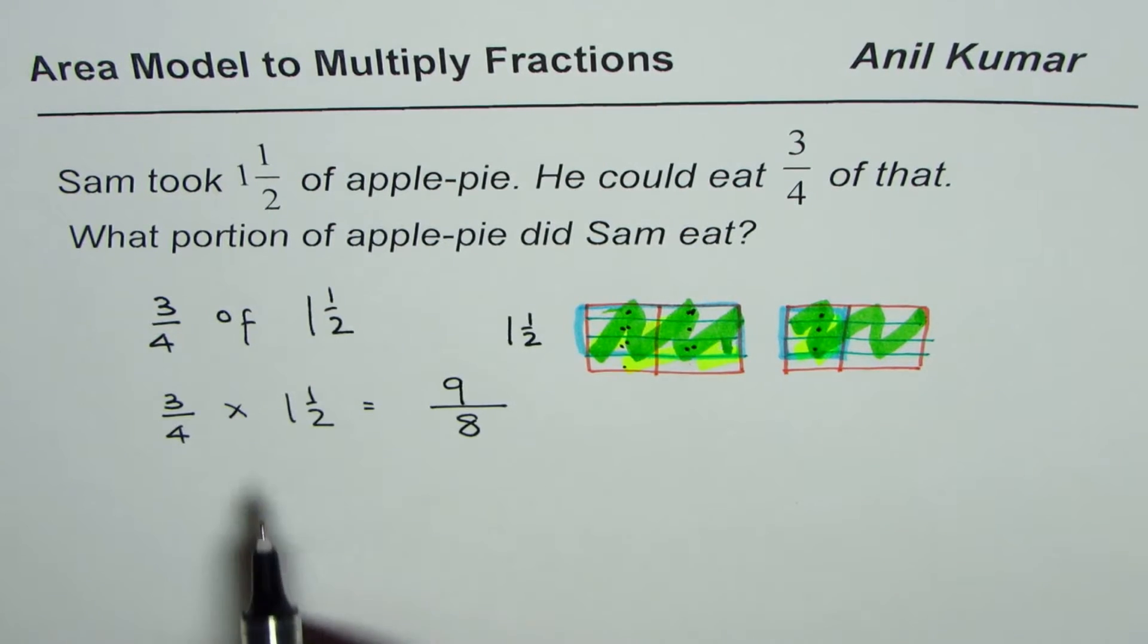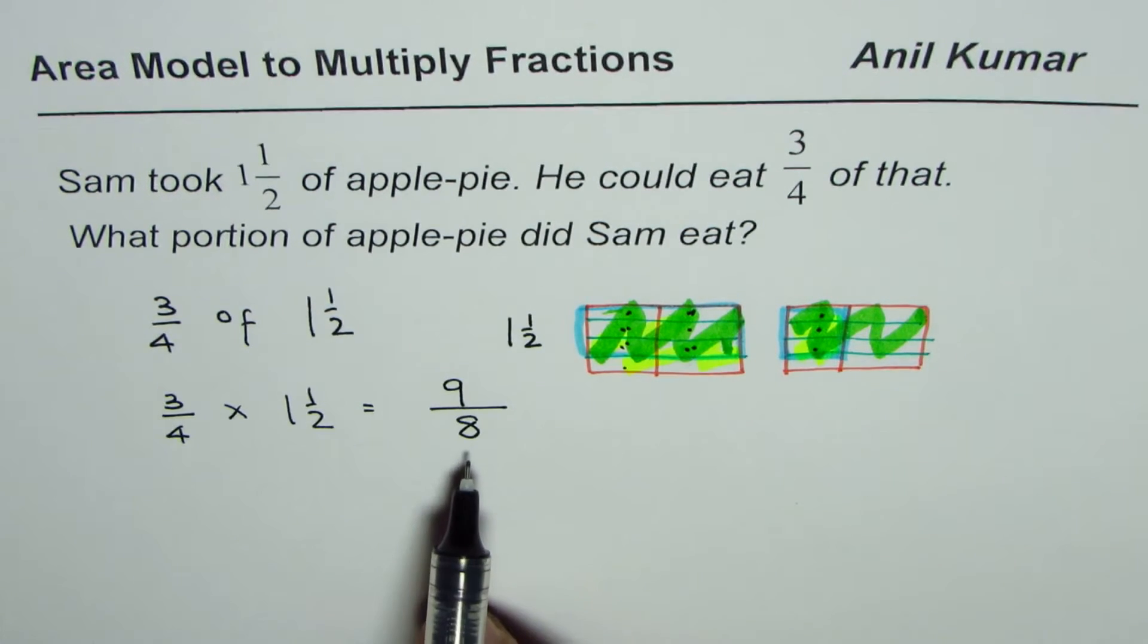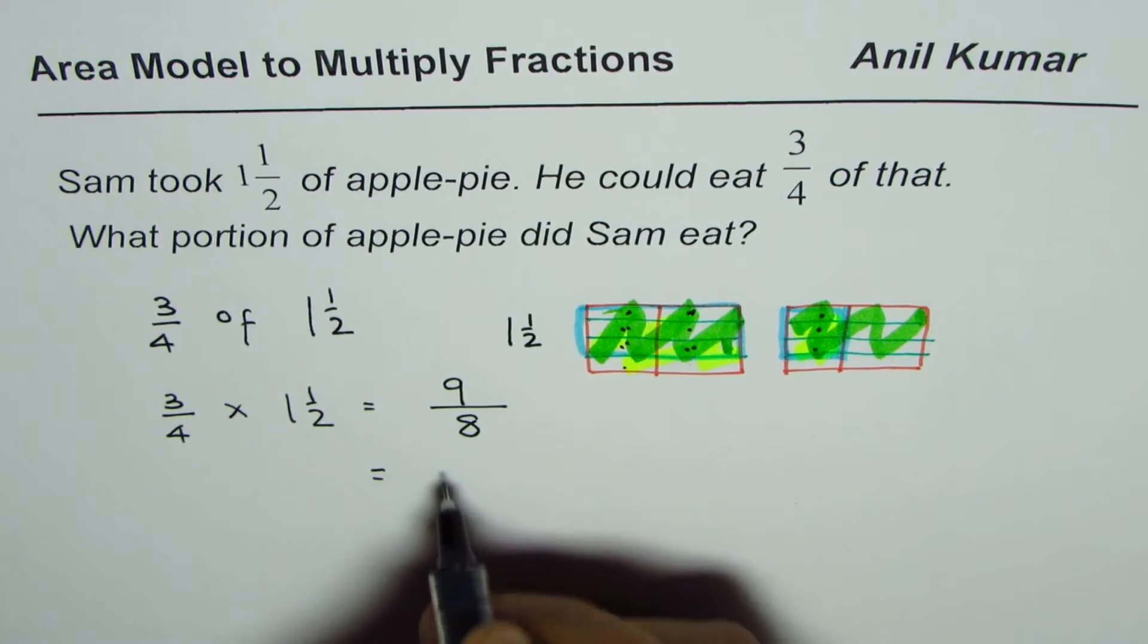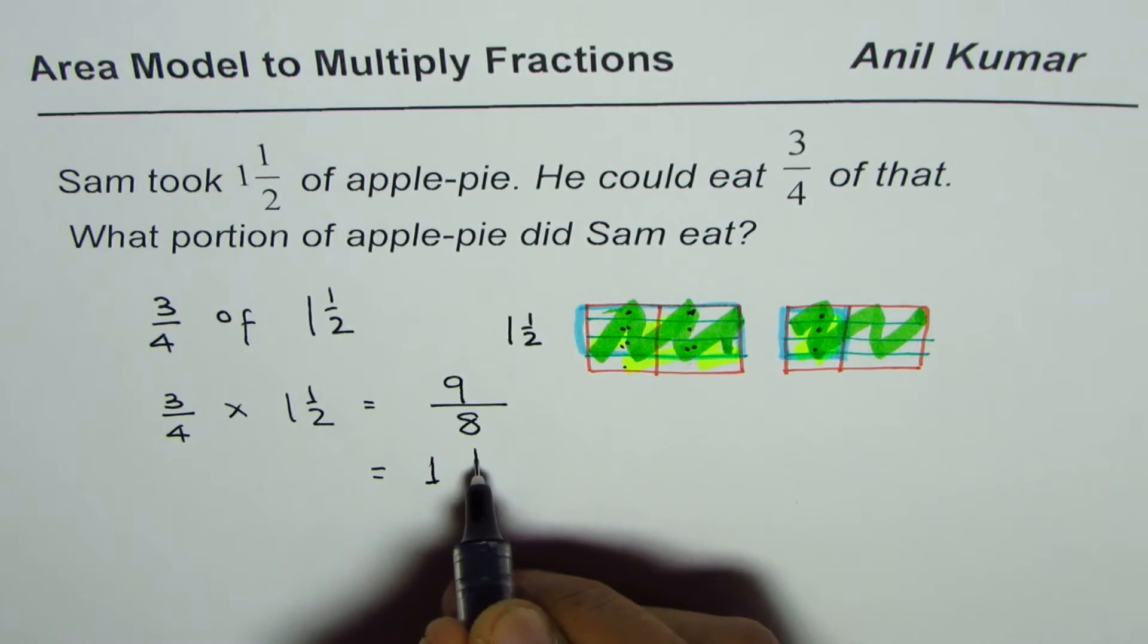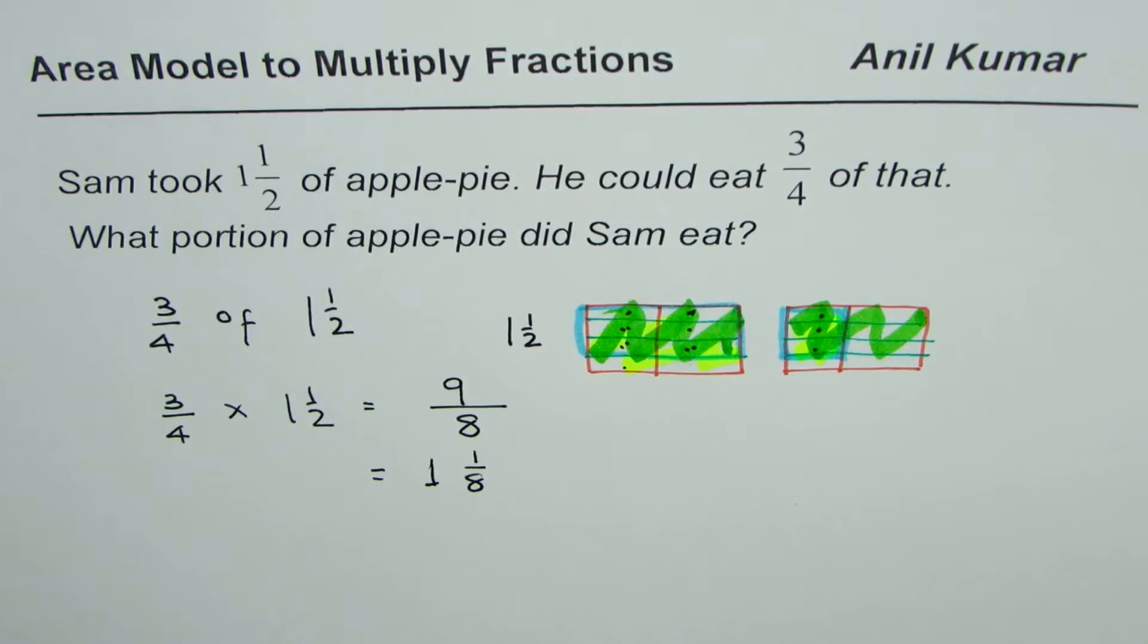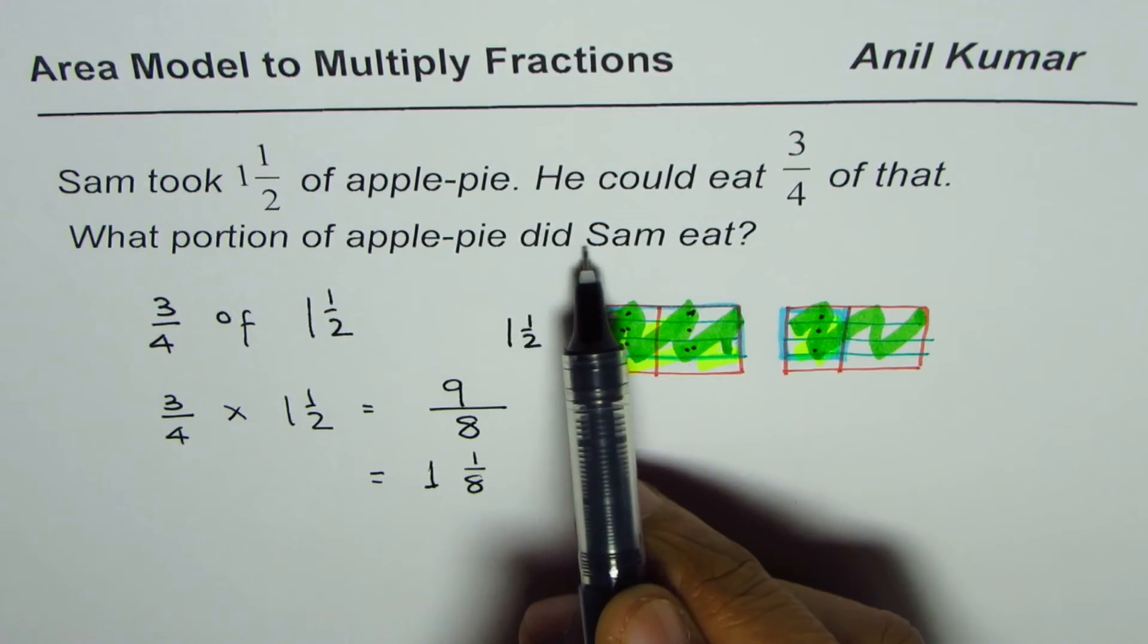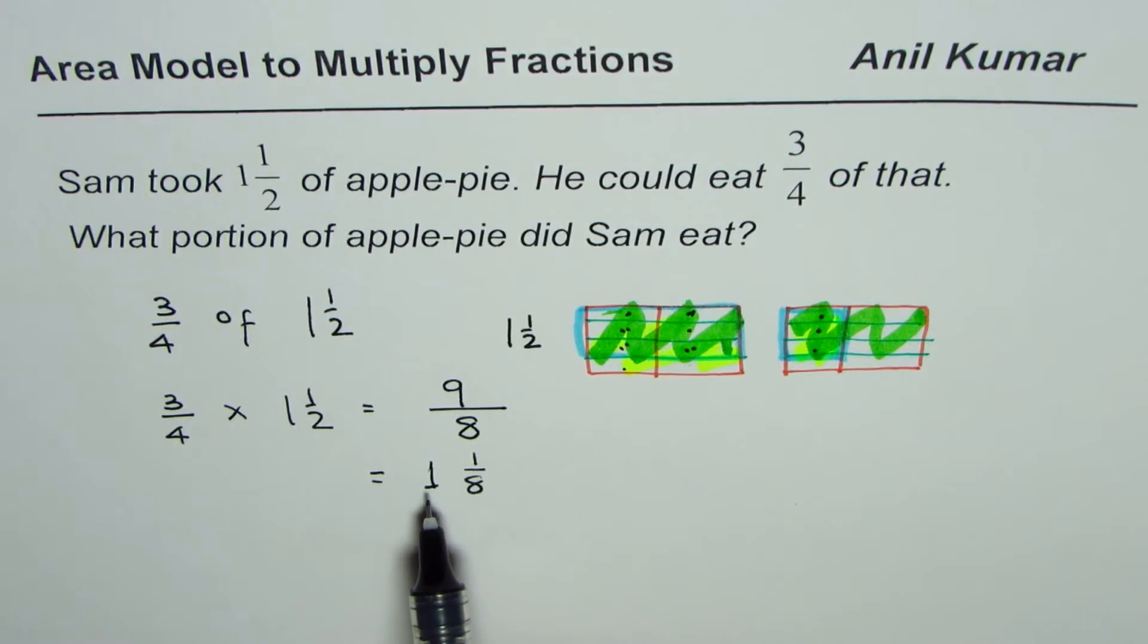Therefore, our answer is nine over eight. Now, nine over eight can be written as one whole and one-eighth. So that is one and a half pie, and out of that, three-fourths has been eaten. So Sam ate one whole and one-eighth of the other one. That's how we can solve such a question.